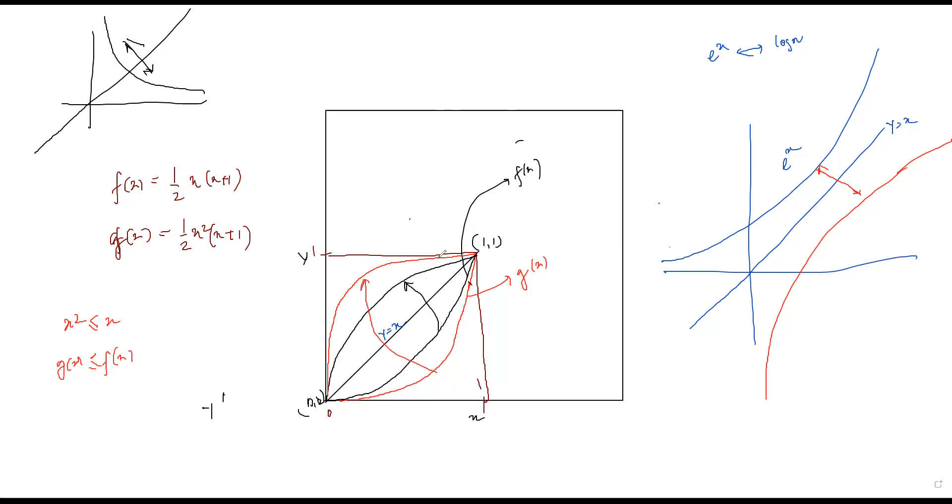So it's asked to find the area between the inverses. This is nothing but g^(-1)(x), and this is nothing but f^(-1)(x). So the area between these curves—let me draw it for you—the area between the curves...